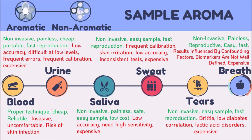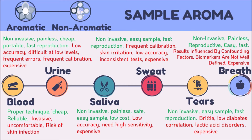We start with sample aroma. In electronic nose research used for medical needs, the aroma sample used can be either invasive or non-invasive. Aroma samples used in previous studies include blood, urine, saliva, sweat, tears, and breath. Blood is a sample that is often used in invasive identification. The process of taking a blood sample provides a feeling of trauma and discomfort for the patient, while also being at risk of skin infection.